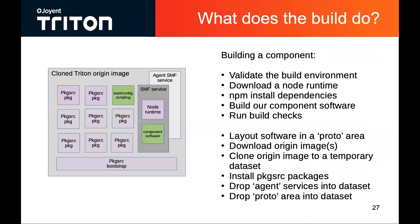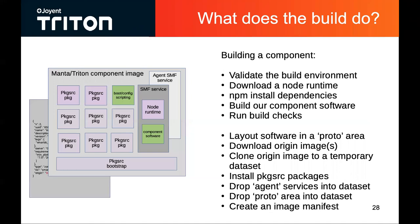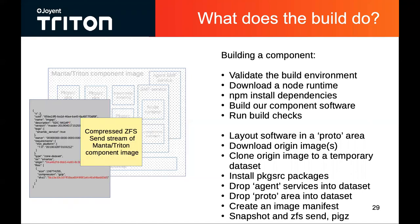Next, we'll drop the proto area into our dataset, and at this point we're almost done — we've got essentially all the software that our component is supposed to run with available. Next we'll produce an image manifest, and that manifest comes from metadata that's included in the makefile. The last thing to do is to create the send stream — we take another snapshot of the origin image area and create a send stream that contains our differences. So we're basically done at that point. We've got an image that we can deploy.